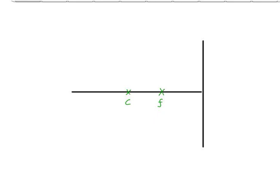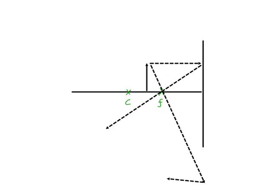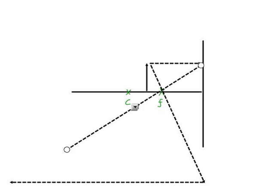If we then put our object between C and F, we can draw the rays as follows. Parallel goes through focus, through focus goes parallel, and I'll have to extend this ray right here.